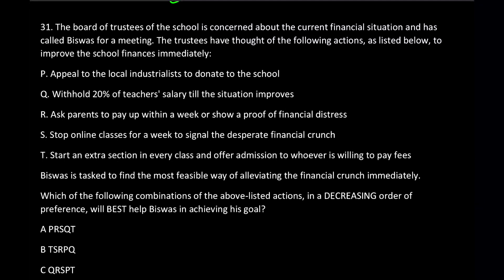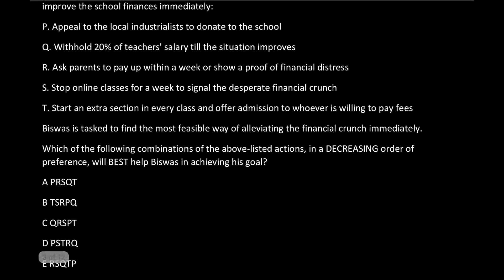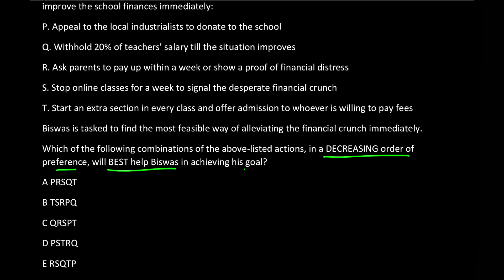Question 31: the board of trustees is concerned about the financial situation and has called Bishwas for a meeting. The trustees have thought of the following actions to improve the school's finances immediately. The question asks: which combination of actions in decreasing order of preference will best help Bishwas achieve this financial improvement goal? Decreasing order of preference means most preferred first, from high to low.